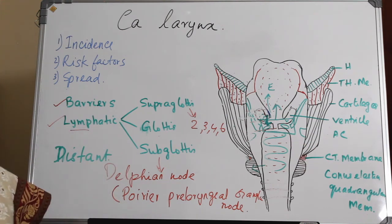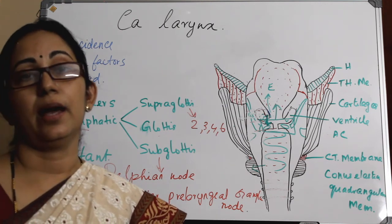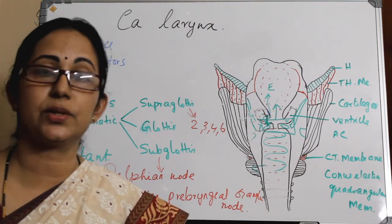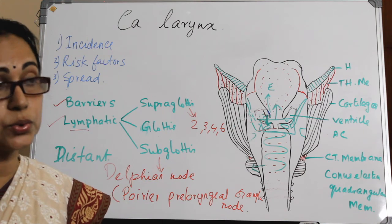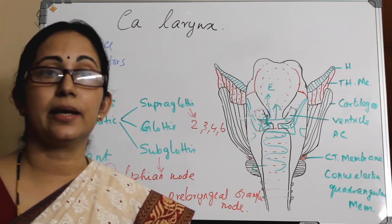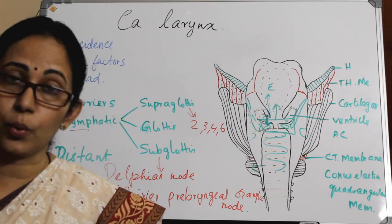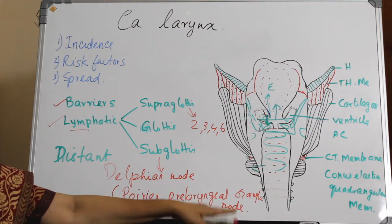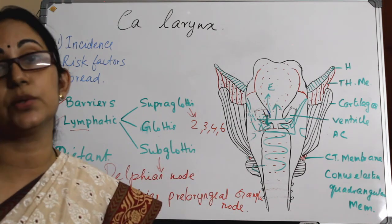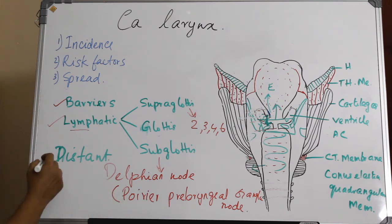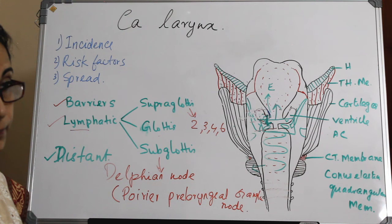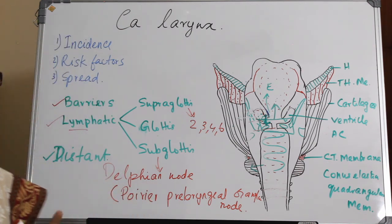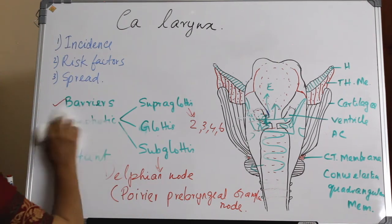Distant metastasis most commonly occurs to the lungs because of close proximity. Less often it can go to the skeleton and liver. Mediastinal involvement, if it occurs, is considered distant metastasis. Distant metastasis occurs mainly through hematogenous spread. That covers the spread of carcinoma of the larynx; the next topic is the methods of diagnosis.